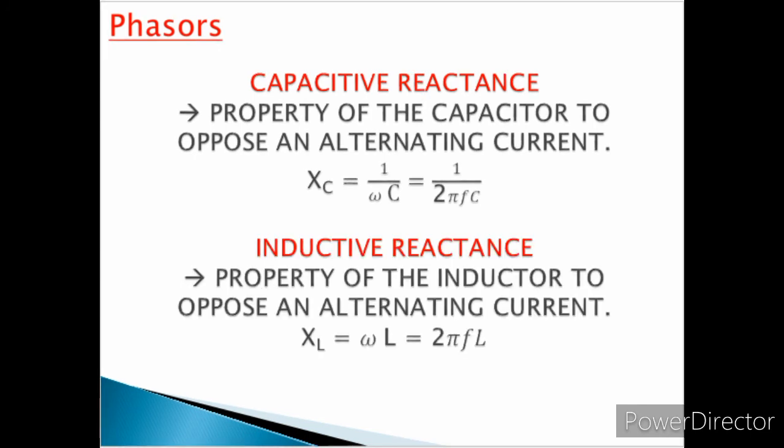Inductive reactance is the property of the inductor to oppose an alternating current, denoted by X sub L, which is equal to omega L, also equal to two pi f L.